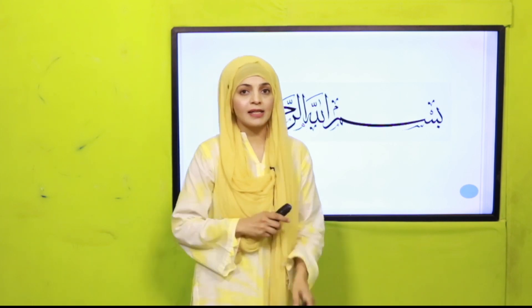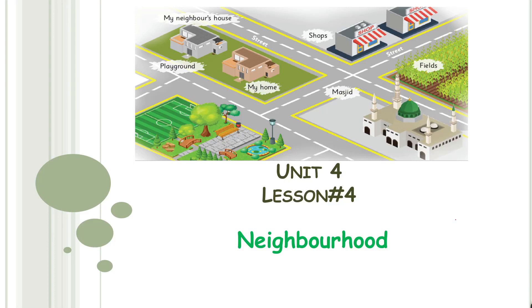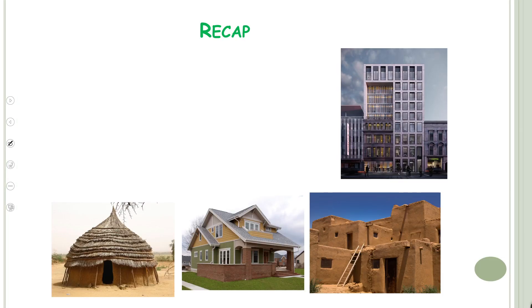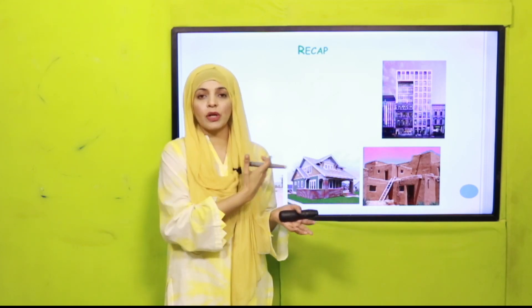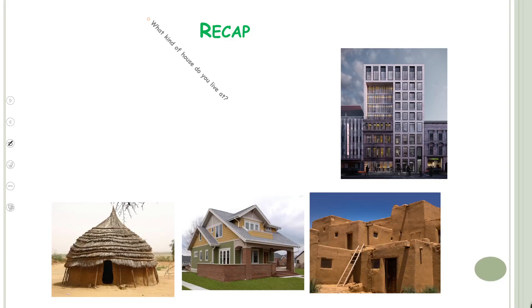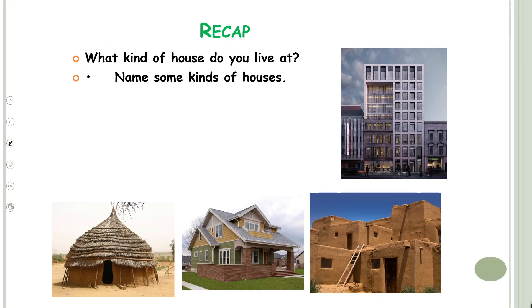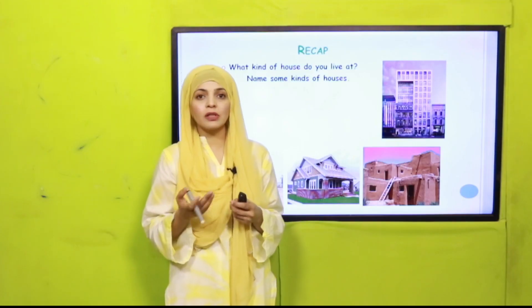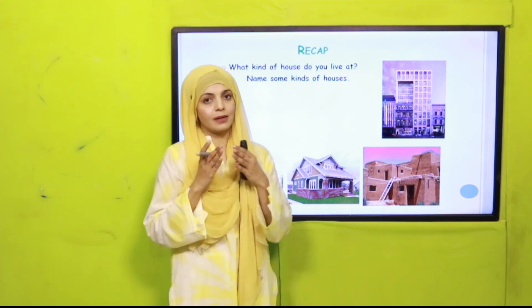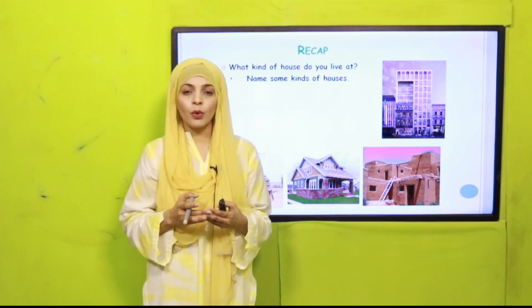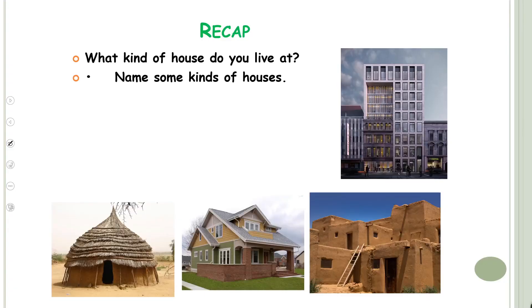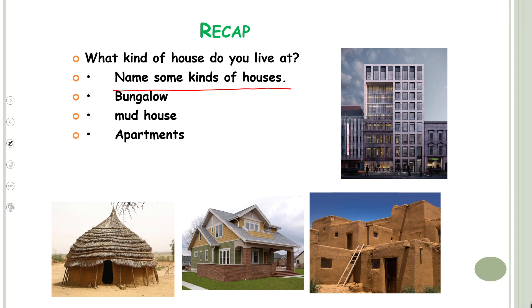Take out your GK books and let's start today's lesson. We are on Unit Number 4 and today is its fourth lesson. The name of our unit is 'Neighborhood.' Let's quickly recap what we did in the previous lesson — Lesson Number 3. We discussed different kinds of houses. Tell me: what kind of house do you live in? Is it a hut, a mud house, a bungalow, or an apartment? Good — name some kinds of houses: bungalow, mud house, apartments, and hut.